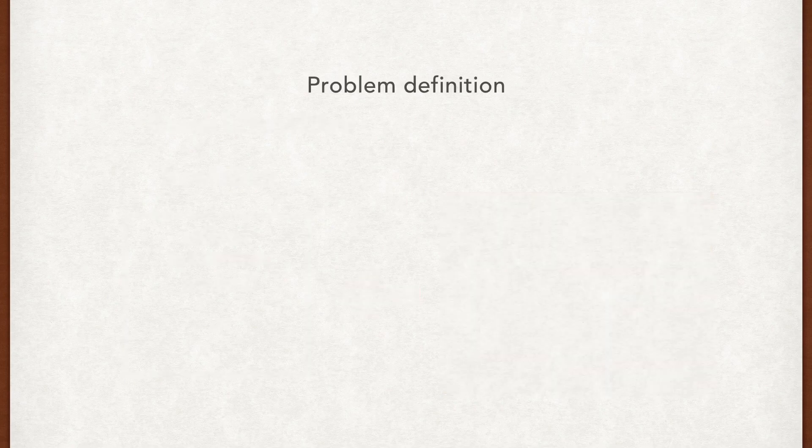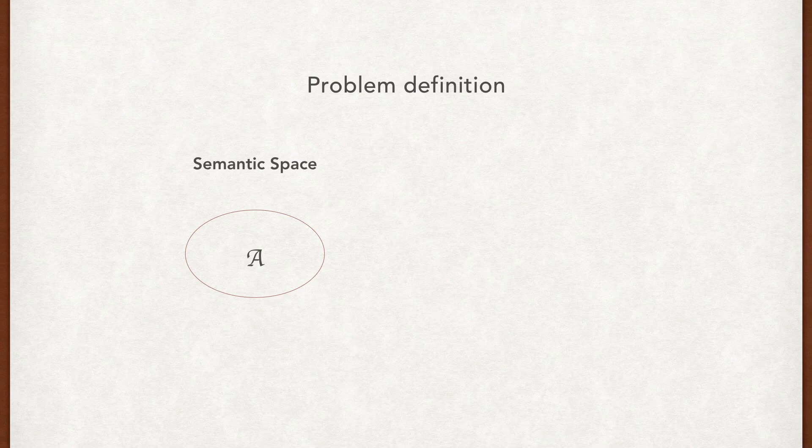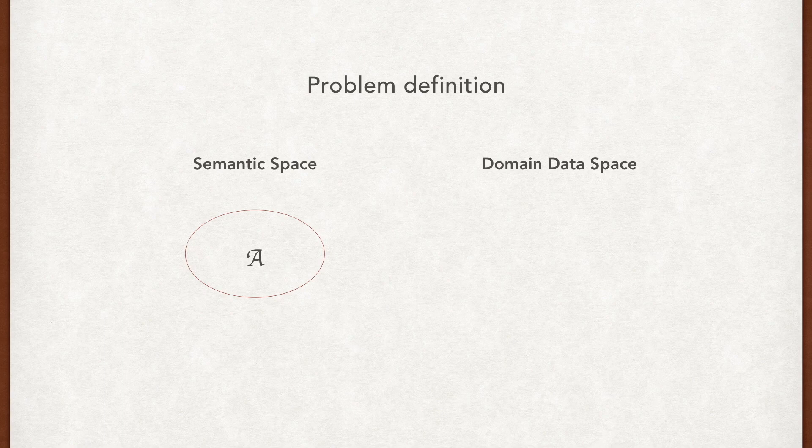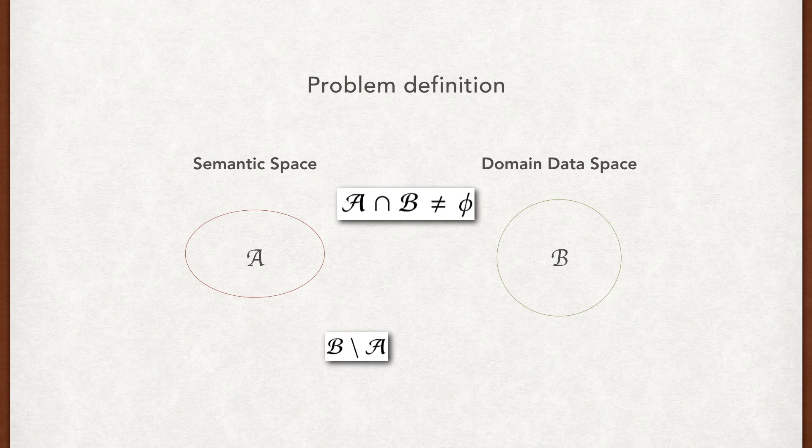This problem can be defined as follows. Given an entity set A with their embedding vectors defined in the semantic space, where the intersection of A and B is not empty, we want to derive the embedding vectors for those entities that exist in B but not in A.